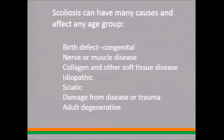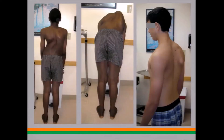Many things can cause scoliosis: nerve and muscle disease such as cerebral palsy or muscular dystrophy in kids, Parkinson's disease in adults, collagen disorders like Marfan's or Ehlers-Danlos, and pain from a herniated disc. Adult degenerative scoliosis is probably the most common kind overall, but the most common kind in the population we're discussing today is idiopathic.